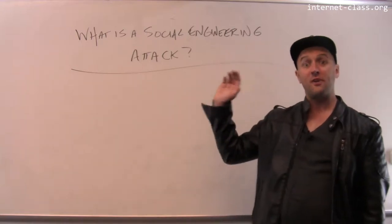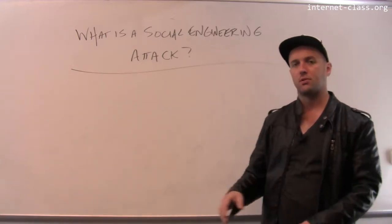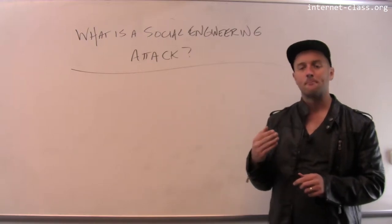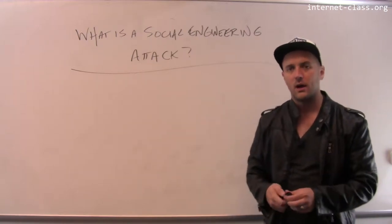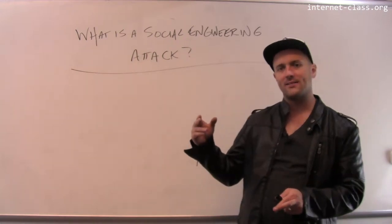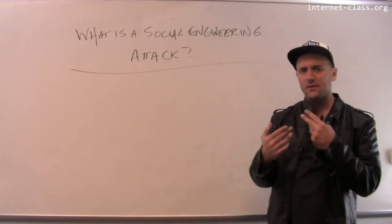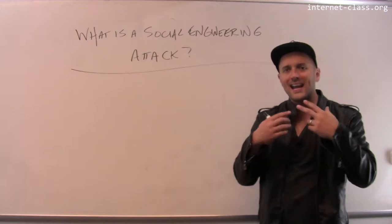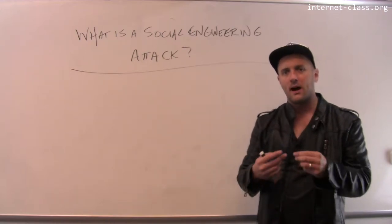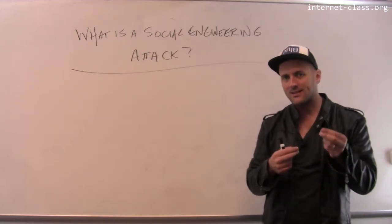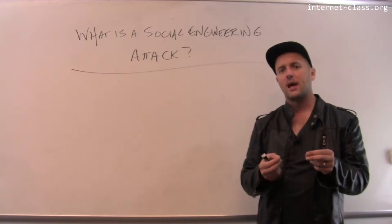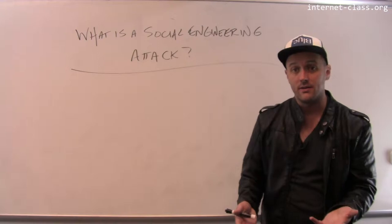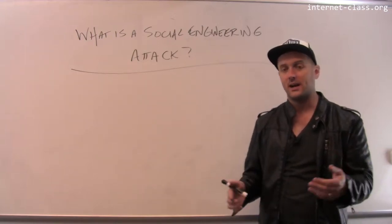Probably the most famous person who committed a fair number of these types of attacks was someone called Kevin Mitnick. A lot of social engineering attacks have to do with taking advantage of information asymmetry — gaining people's confidence by presenting them with information that seems like something you would only know if you knew the person, but is actually really easy to find out.